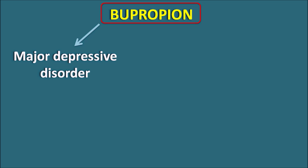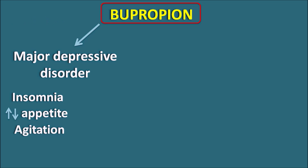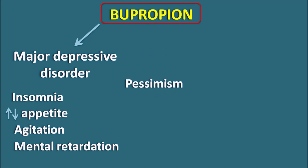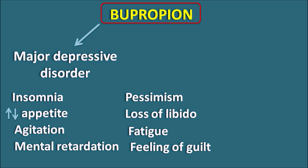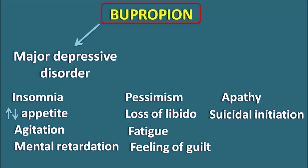Major depressive disorder is associated with symptoms like insomnia, lack of sleep, and either increase or decrease in appetite — so we can observe loss of weight due to loss of appetite, or in some patients an unexpected weight gain. Other symptoms include agitation, psychomotor retardation, pessimism, negative thoughts, loss of libido, fatigue, and feelings of guilt, which is an important indicator of depression, along with apathy, lack of initiation, and suicidal ideation.